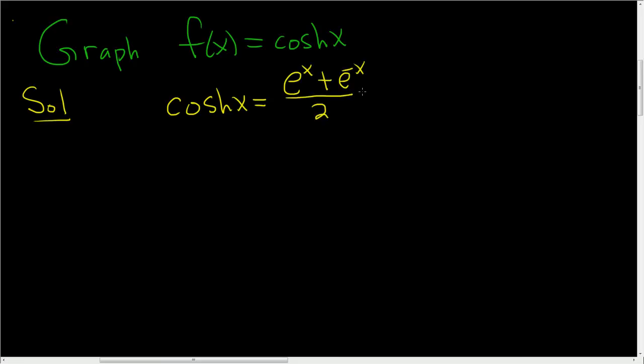I know it's the average. And by using the fact that it's the average of e to the x and e to the negative x, we can actually draw the graph. So let's do that. So this will be the x-axis and this will be the y-axis.